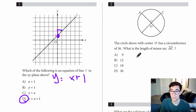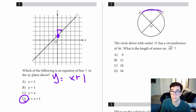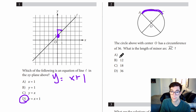Question two: the circle above with center O has a circumference of 36. What is the length of minor arc AC? That's going to be this arc here, and we know that's a fourth because these are all right angles making up one fourth of this pizza pie. So it's going to be 36 divided by four, which is nine. And that's answer eight.